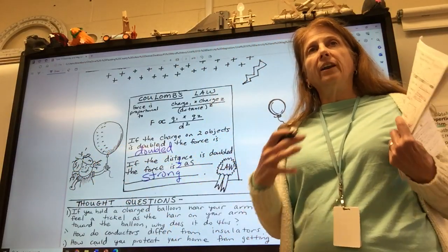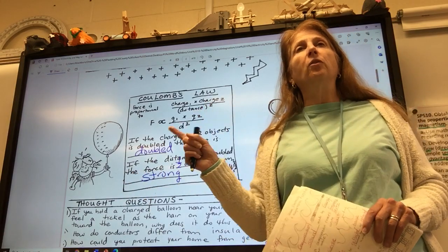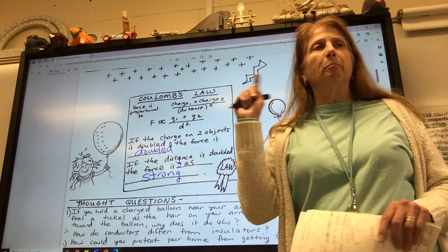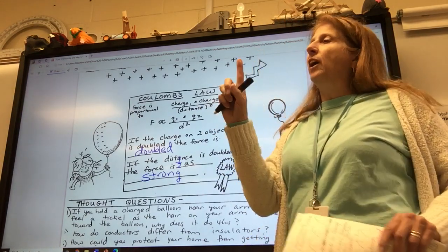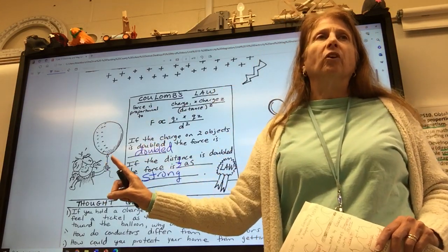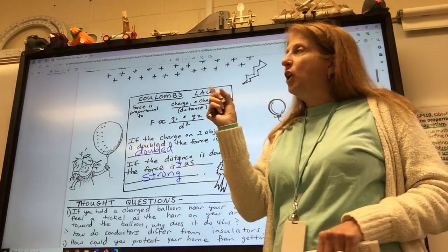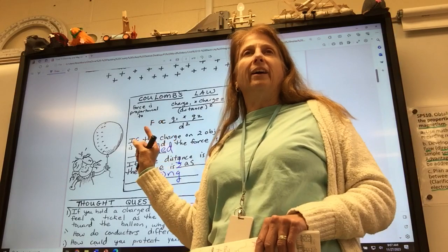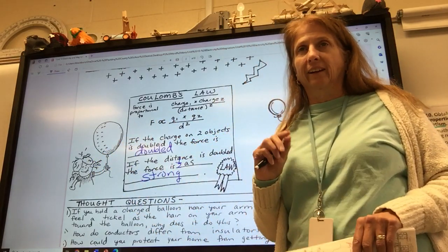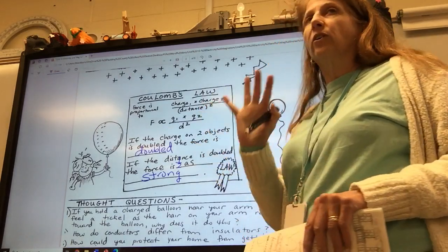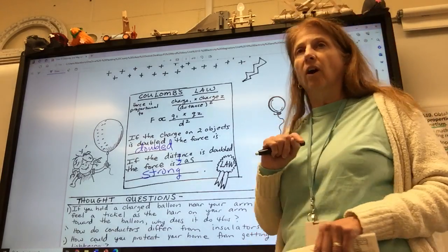You don't have to know the formula, you don't have to use the formula. I just want you to have heard of Coulomb's Law. But I do want you to understand this. If the charge on two objects is doubled, then the force is doubled. If the distance is doubled, the force is half, is one half as strong. So if you separate two things, they're not as likely to have electricity jump between them.